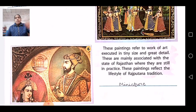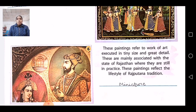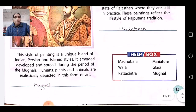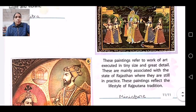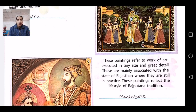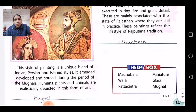Next, these paintings refer to works of art executed in tiny size and great detail. They are mainly associated with the state of Rajasthan, where they are still in practice. These paintings reflect the life of Rajputana traditions. That is Miniature painting — work of art executed in tiny size and great details, mainly associated with Rajasthan where they are still practiced, reflecting the lifestyle of Rajputana tradition.